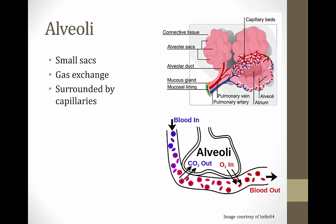The alveoli are small sacs way down in the lungs, after the respiratory tract has branched to its smallest level — this is where gas exchange occurs. They look sort of like a bunch of grapes, and they're surrounded by capillary beds so that air can exchange with the blood.